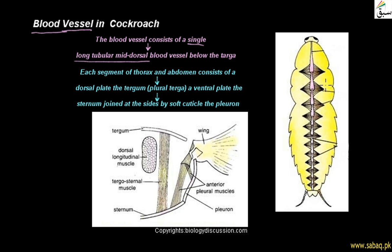Here we are looking at the ventral plate. The sternum is a soft cuticle. Here we are looking at the pleuron and the inter-pleural muscles present. We are also looking at the dorsal longitudinal muscles and the inter-pleural muscle bands, which are involved in respiration, as we have discussed in the last video.